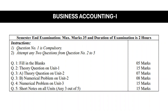So, this is the Business Accounting 1 question paper pattern for the semester end exam. In total, 5 questions will be there. Question No. 1 is compulsory, and you have to solve any 2 questions from Question No. 2 to 5. Question 1: fill in the blanks, 5 marks. Question 2: theory on Unit 1, 15 marks. Question 3 Part A: theory on Unit 2, 7 marks. Question 3 Part B: numerical on Unit 2, 8 marks. Question 4: numerical on Unit 3, 15 marks. Question 5: short notes on all units, any 3 of 5, 15 marks. Total: 35 marks, duration 2 hours.